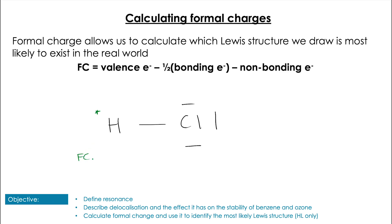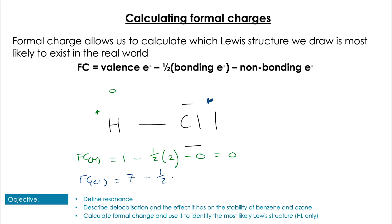If we look at hydrogen as a simple example: one valence electron, one bonding pair, so it's 1 minus half of 2 minus 0, giving a formal charge of zero. In the case of chlorine: seven valence electrons, one bond so half of 2, and six non-bonding electrons — so 7 minus 1 minus 6 equals zero. Both atoms in HCl have a formal charge of zero.